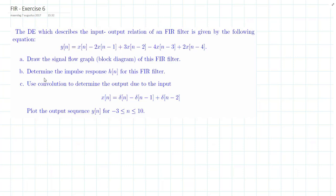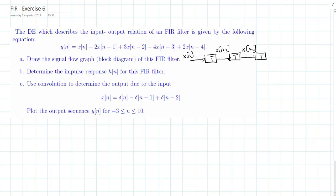So our signal flow graph of this FIR filter. We start by creating our input x[n] and all the different delayed versions up to x[n-4]. The first delay gives x[n-1], another delay gives x[n-2], another gives x[n-3], and finally the last delay gives x[n-4].